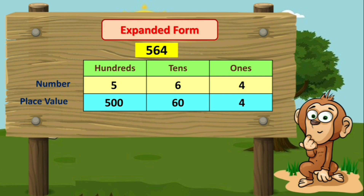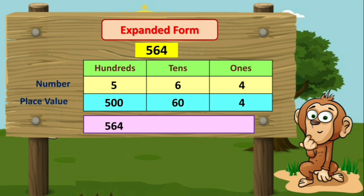Now, children, let us learn how we will write a number in its expanded form. As we already know, the expanded form is shown as the sum of the place value of each digit. That's why we will write the number five hundred and sixty-four as the sum of its place values — that means five hundred plus sixty plus four. So, have you understood? The expanded form of five hundred and sixty-four is equal to 500 + 60 + 4.